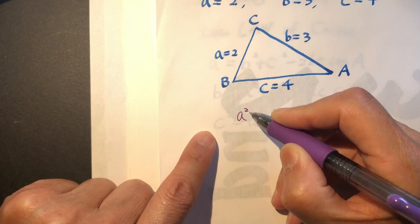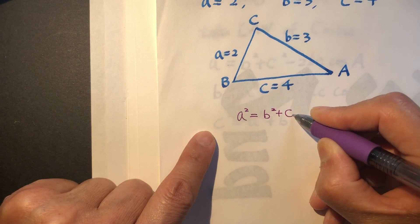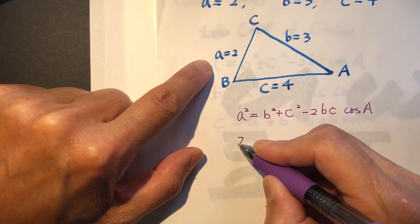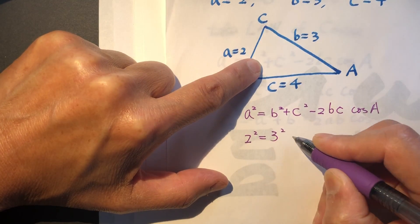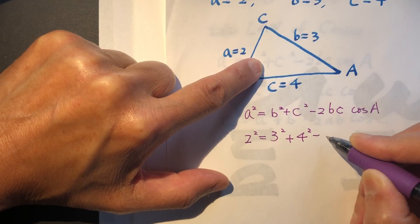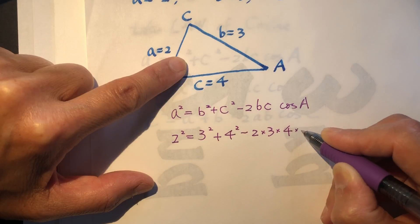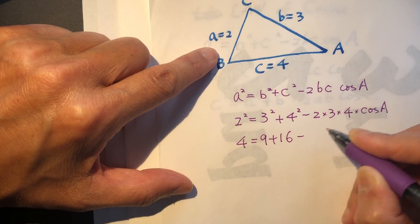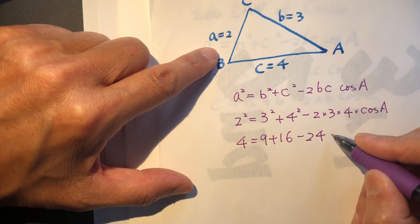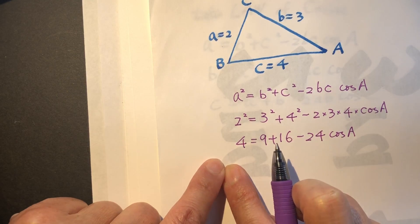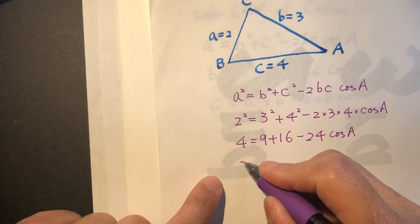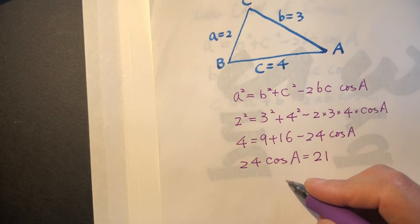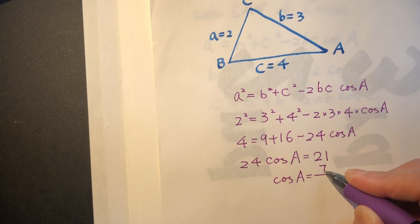A squared equals B squared plus C squared minus 2BC cosine A. So 2 squared equals 3 squared plus 4 squared minus 2 times 3 times 4 times cosine A. That gives us 4 equals 9 plus 16 minus 24 cosine A. Moving terms: 24 cosine A equals 25 minus 4, so cosine A equals 21 over 24, which simplifies to 7 over 8.